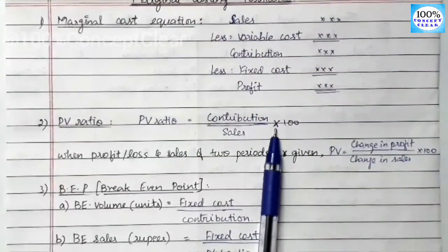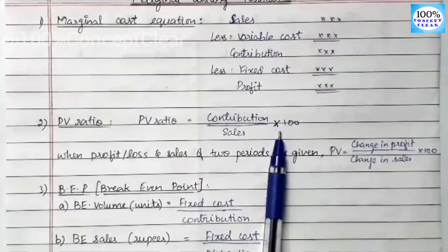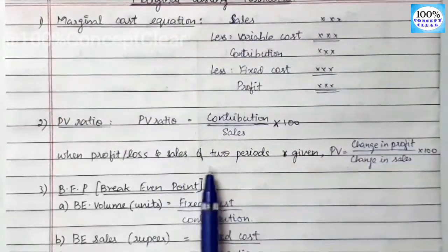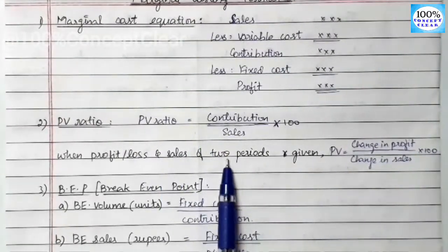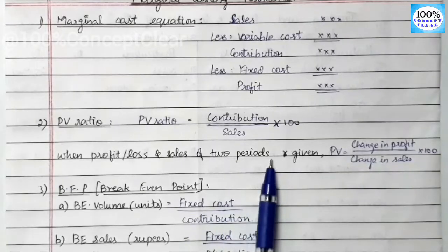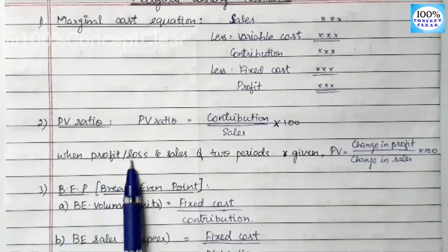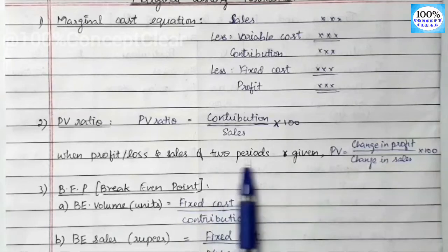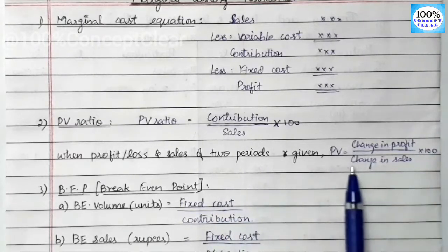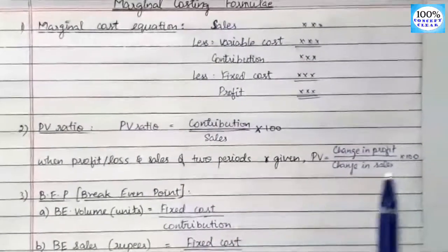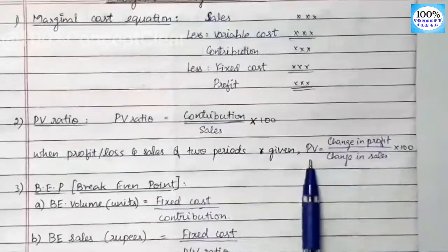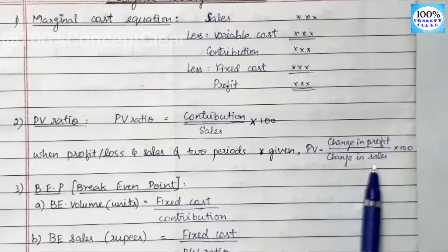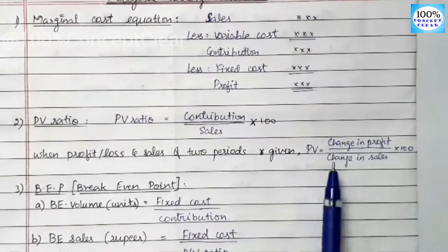When we have information for two periods, we use a different PV ratio formula. When profit and sales of two periods are given, PV ratio equals Change in Profit divided by Change in Sales, multiplied by 100.